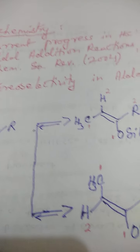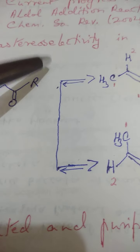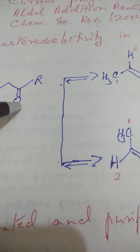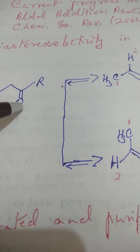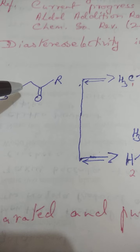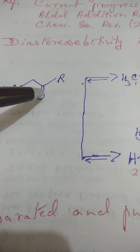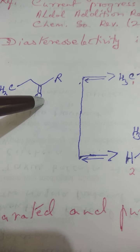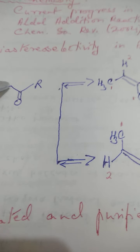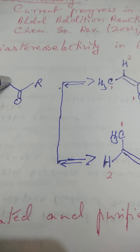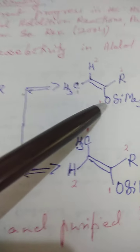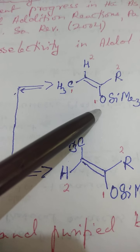Diastereoselectivity implies that we are getting a pair of diastereoisomers and from those diastereoisomers we select one of them. In the reaction of CH₃CH₂COR in the presence of a base, the base withdraws a hydrogen ion to give a carbanion — the enolate — which is trapped in the form of a trimethylsilyl ether.